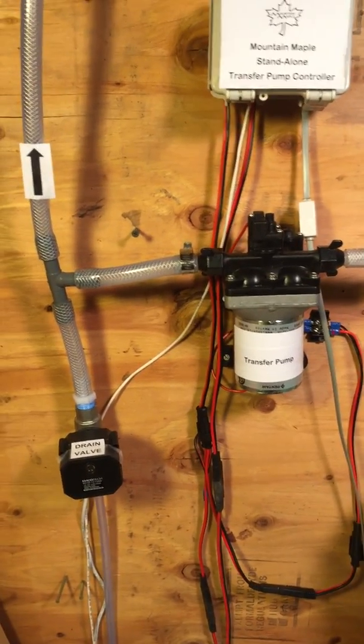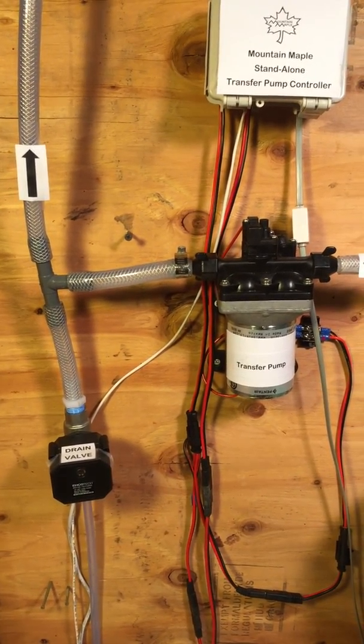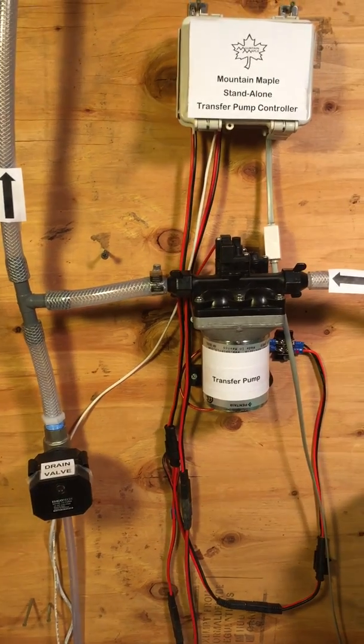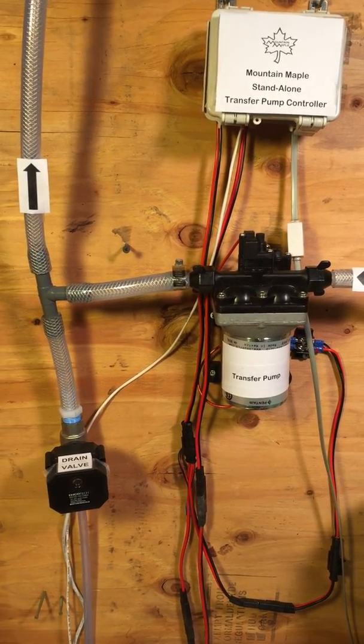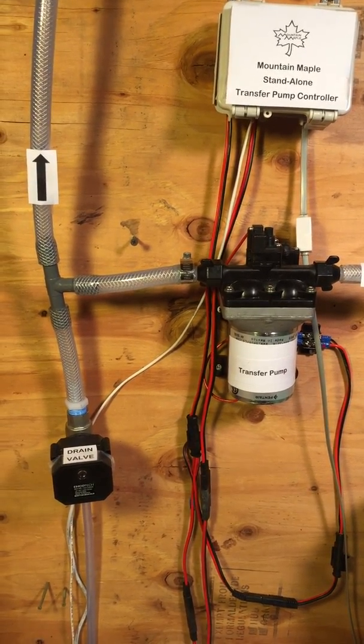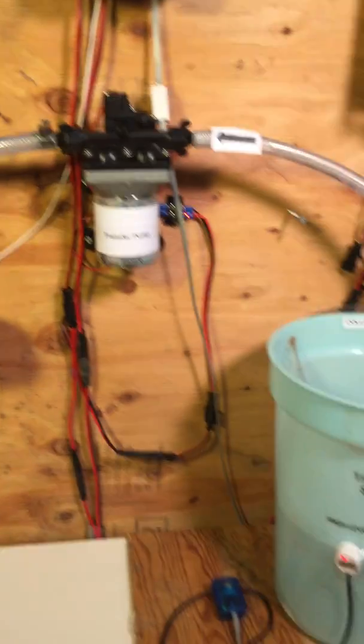The drain valve empties the line after the transfer so that you don't have that sap left to either spoil in the warm weather or freeze in the cold weather.